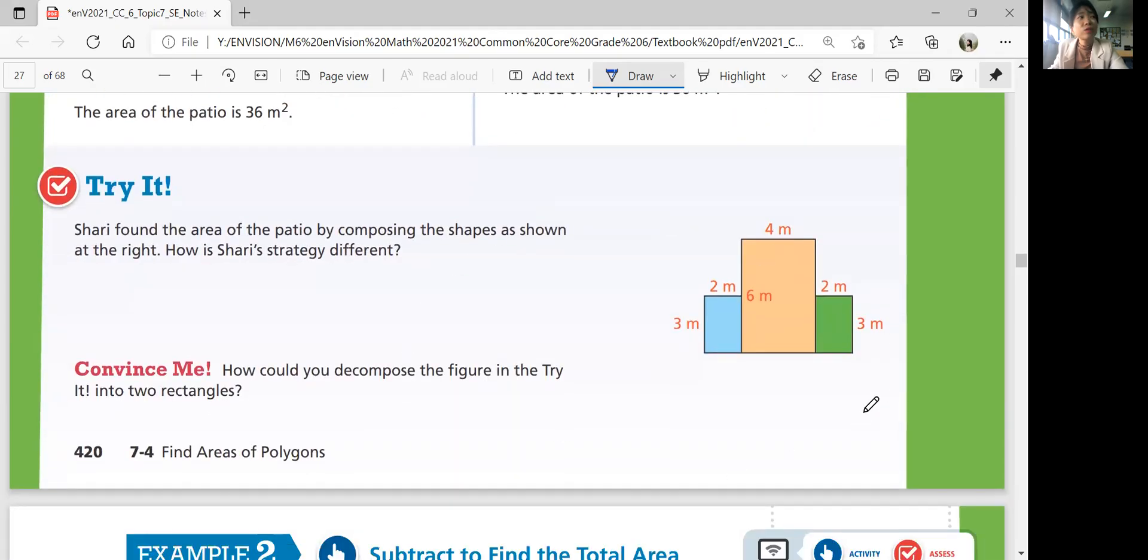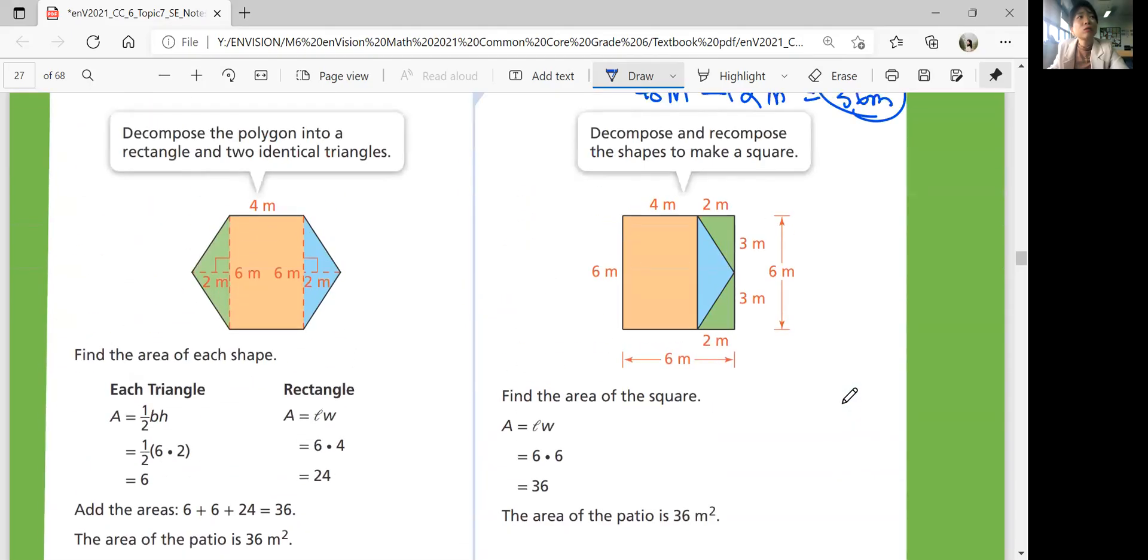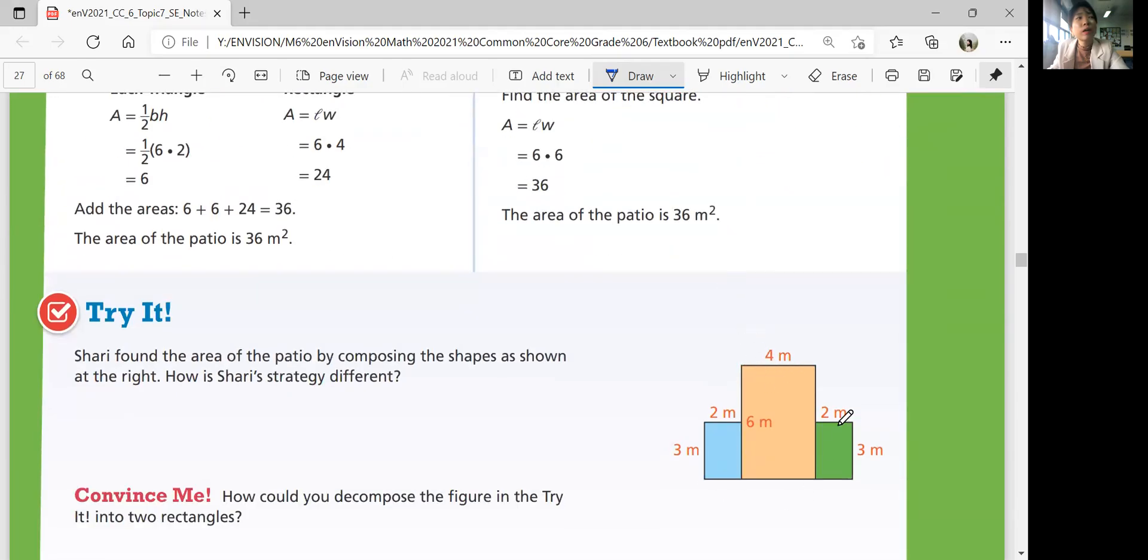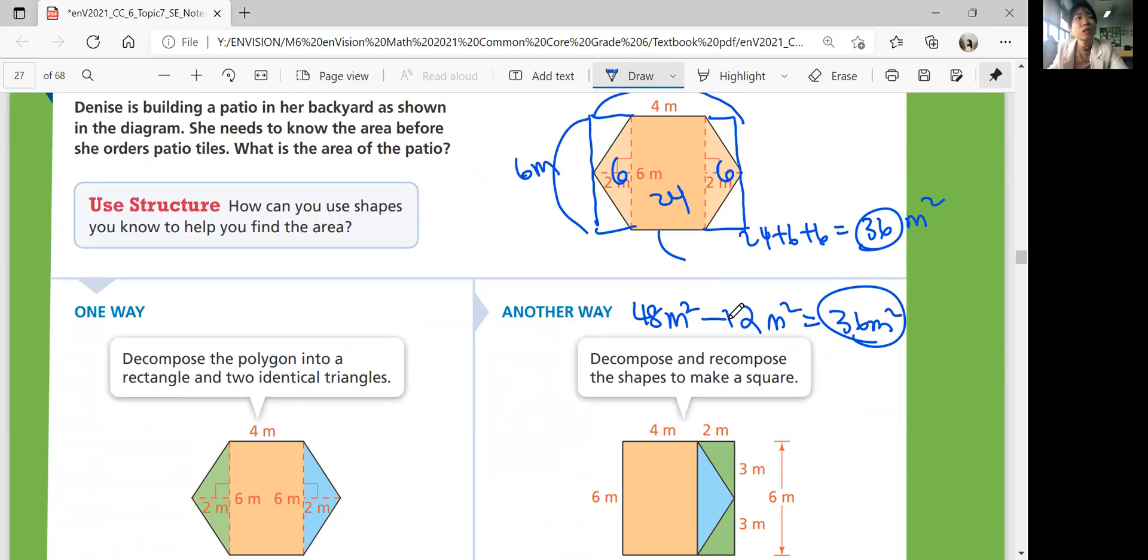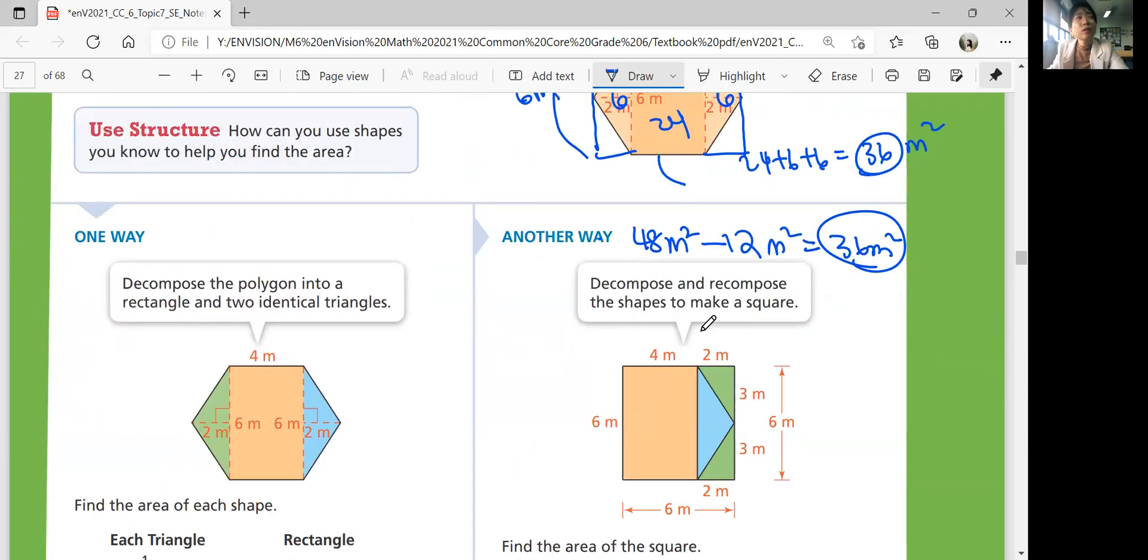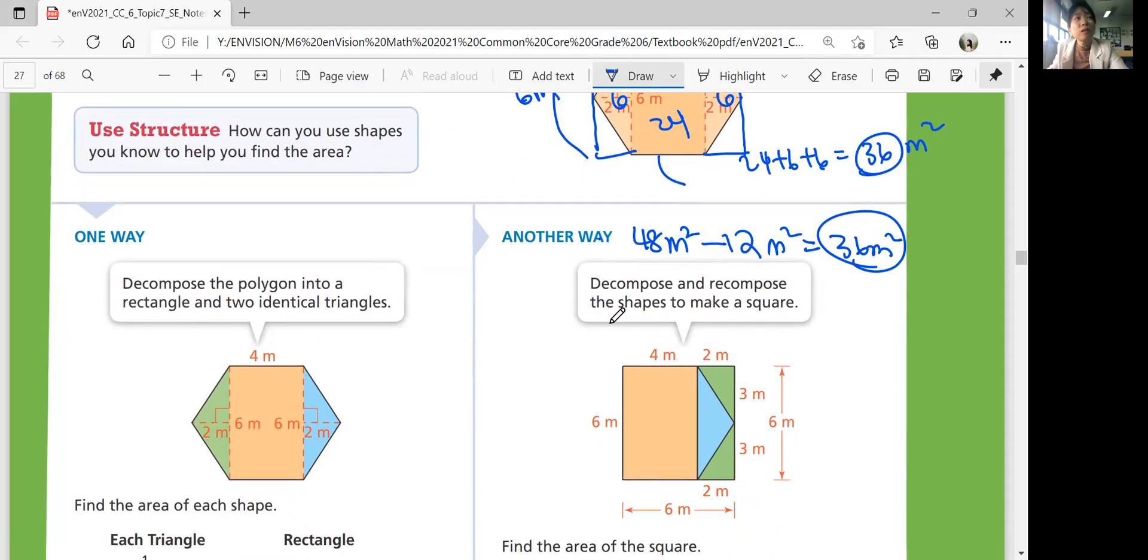Let's see if you can do this try question by yourself. Sherry found the area of the patio by composing the shapes as shown at the right. How is Sherry's strategy different? So it's the same problem. Sherry's going to find this area in order to find the area for that. So you can decompose and put the shapes over here. So this is a third way.